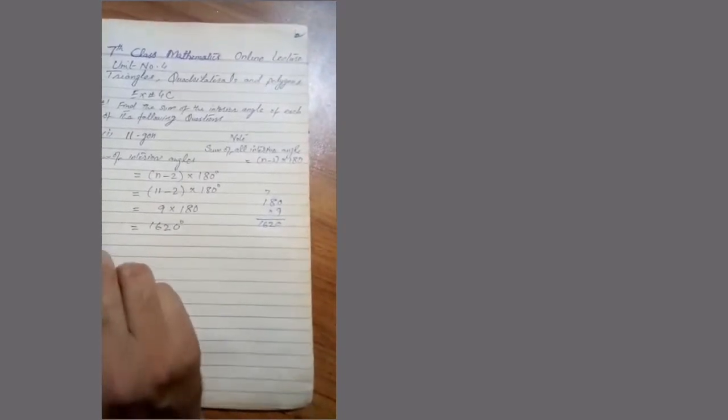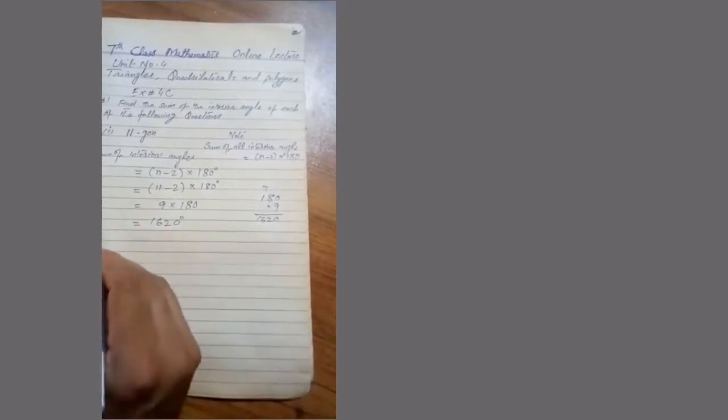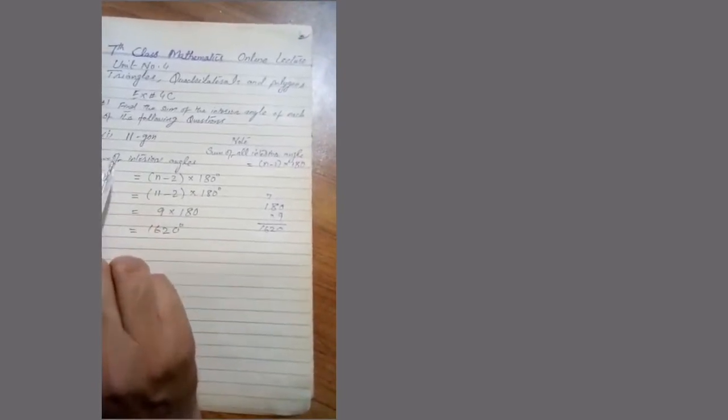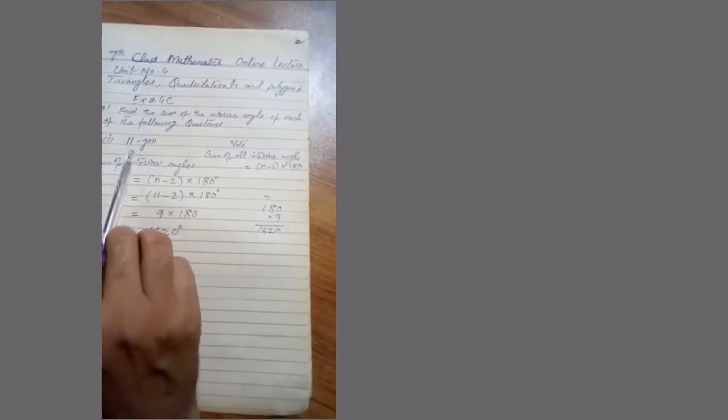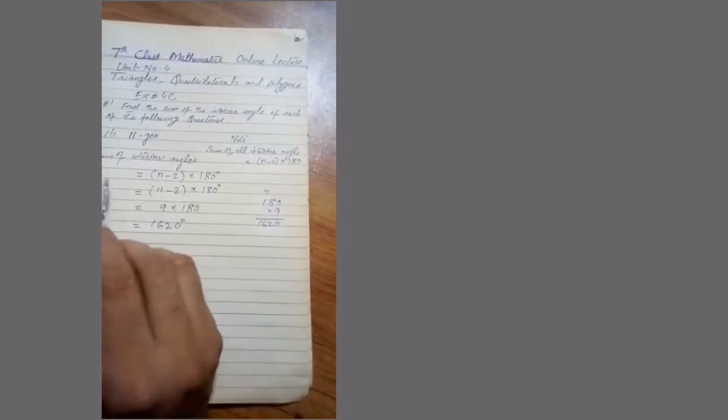11 minus 2 equals 9, multiply by 180. So 180 multiplied by 9 gives 1620 degrees. This is the sum of all the interior angles of an 11-gon — an 11-sided shape.